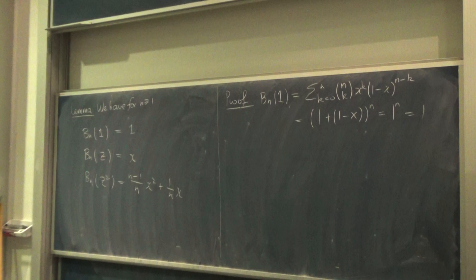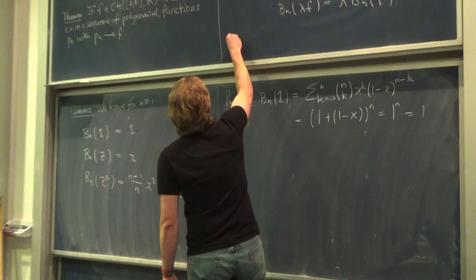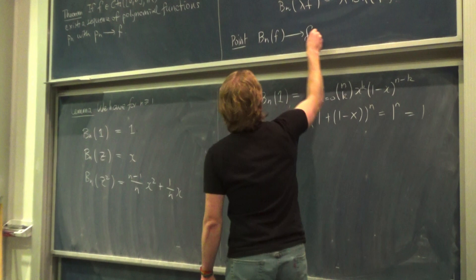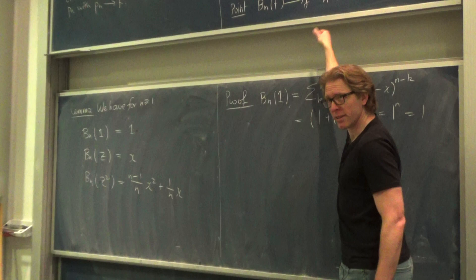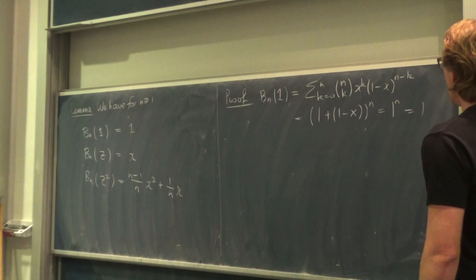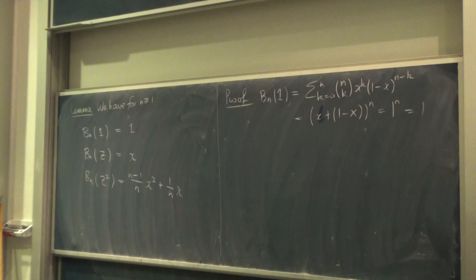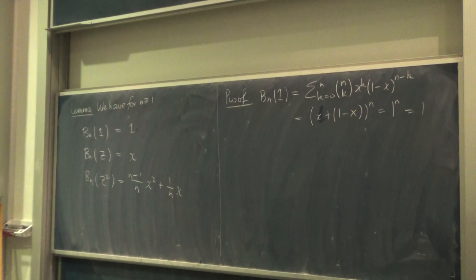Let me foreshadow the point of these polynomials. We're going to prove that if f is continuous, then B_n(f) converges to f as n goes to infinity. So this will be the sequence of polynomials. The third calculation — computing B_n(z²) — is the only tricky part in the whole business, though not that tricky.